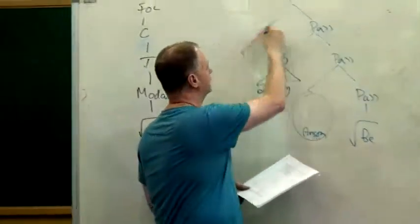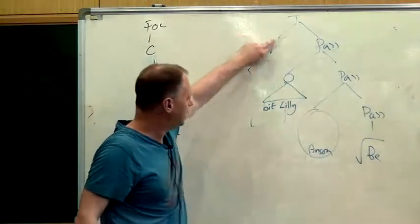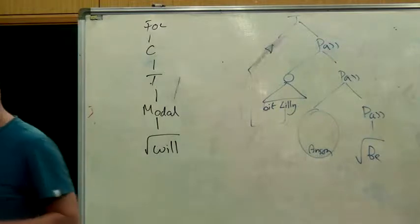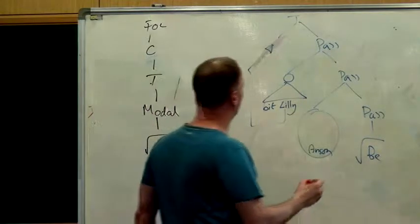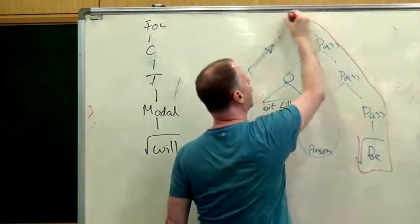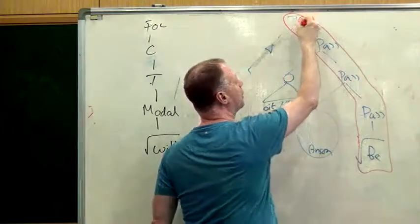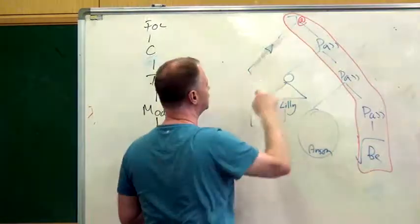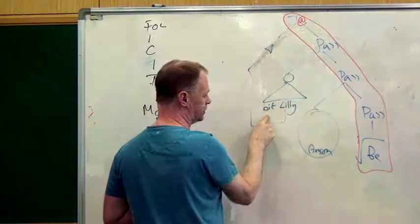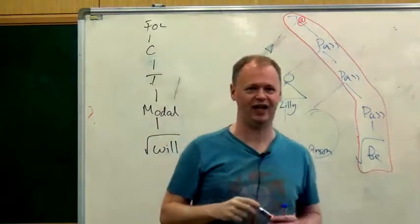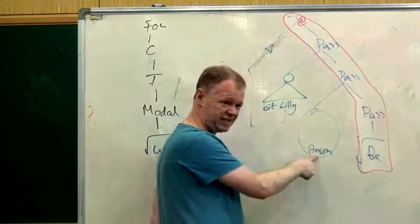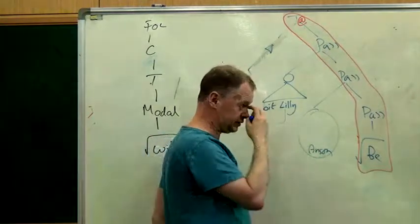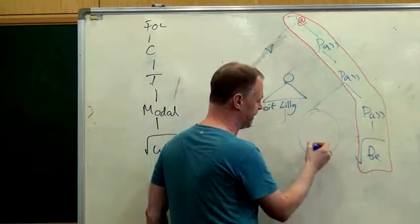And then just as Collins does, we can take Lily and move her out and put her in spec-T. So we've got 'Lily'. Now here we have 'B' for 'be'. In English, auxiliaries are pronounced high. So actually for 'pass', for this span here with 'pass' in it, this is where we pronounce it in English — that's the distinction between main verbs and auxiliary verbs in English. So we pronounce this 'B' up here. We get 'Lily was', assuming this is 'pass', 'bit by Anson'. Now it's not quite English yet — it should be 'Lily was bitten by Anson'.